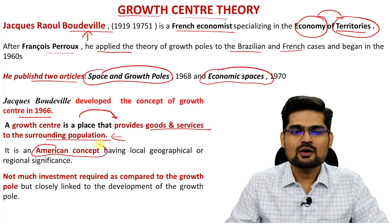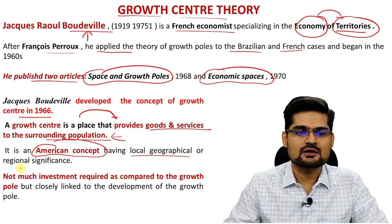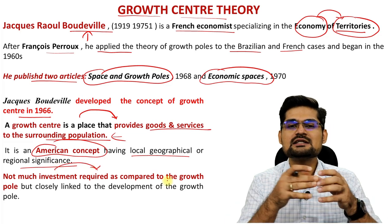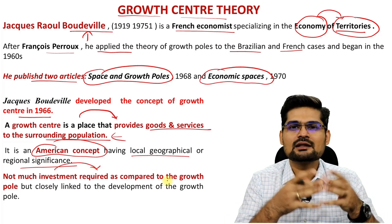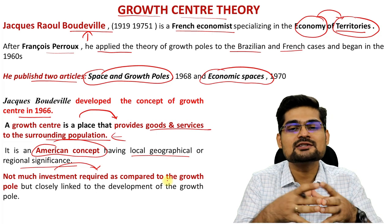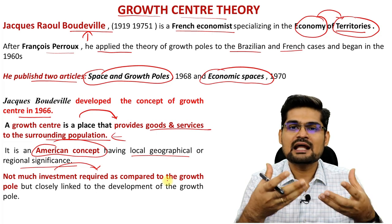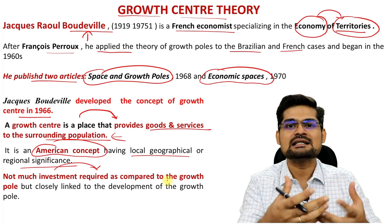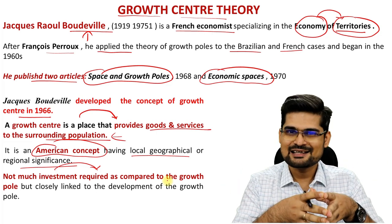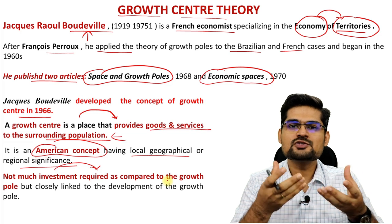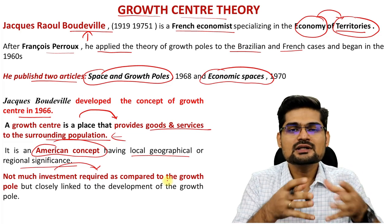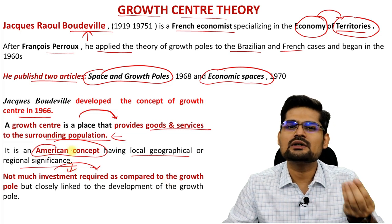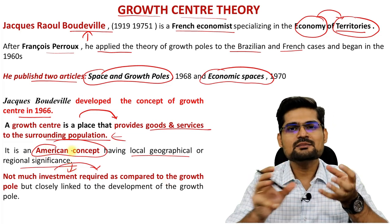It was again an American concept having local geographical or regional significance, and not much investment was required. Remember, the baseline of growth pole theory was that investment is required — the propulsive firm needs an initial input to become financially independent so it can propel growth around its linked industries. But here, not much investment is required to create a growth center. These are the basic differences.